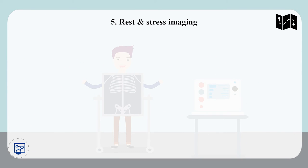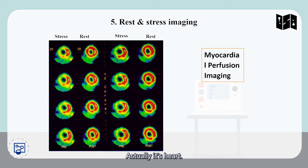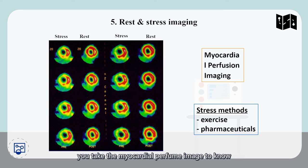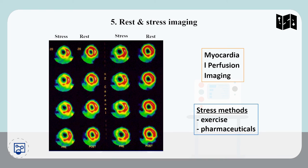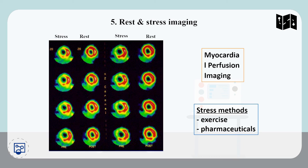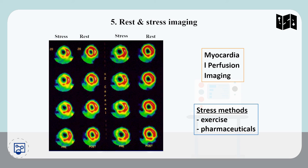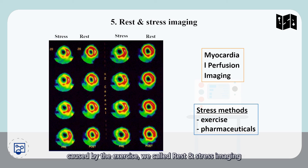The fifth classification is rest and stress imaging — actually for the heart. You can do myocardial perfusion imaging. In the rest stage, with no exercise, just taking a rest, you take the myocardial perfusion image to know whether the patient has cardiac ischemia. Or you can let the patient do exercise — we call the stress method — then do the myocardial perfusion imaging to see whether the patient shows ischemia because of exercise. We call this rest and stress imaging.